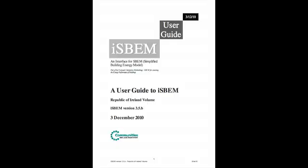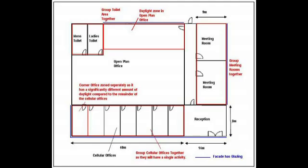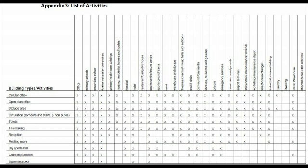Zoning. Assessors must adhere to the Zoning Convention as set out in the ISBEM User Guide. The end result of the zoning process is a set of zones which are distinguished from all others in contact with it by differences in their activities, building services or daylighting provisions. The list of activities associated with zones is set out in the NEEP Survey Guide.